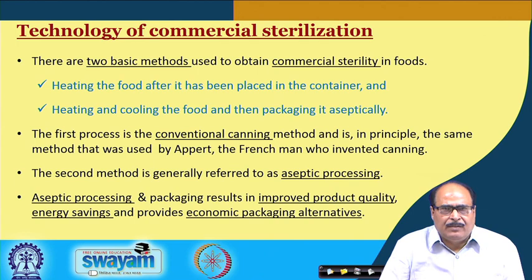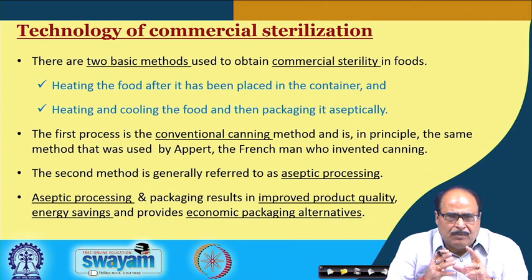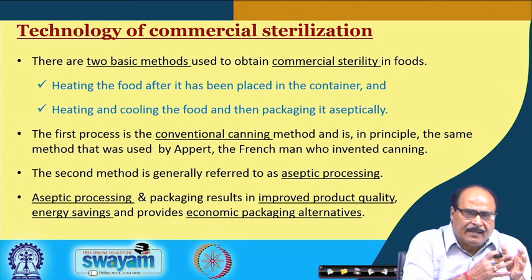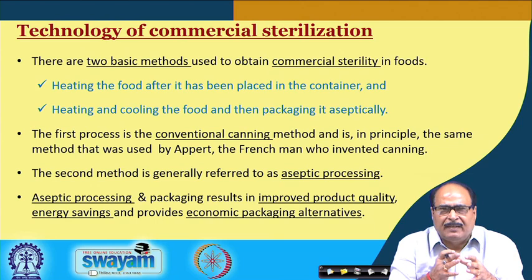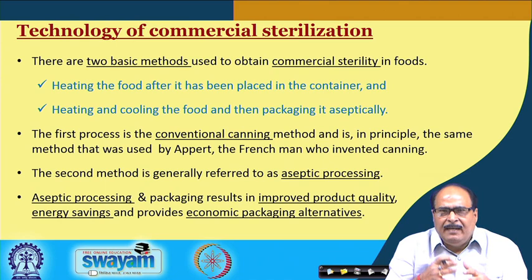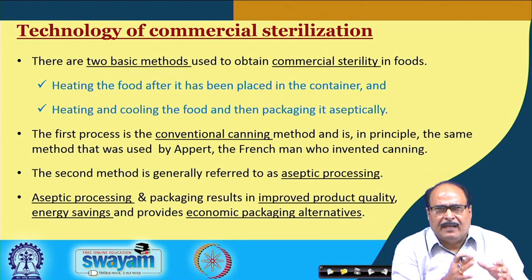There are basically two methods which are generally used for commercial sterilization of foods. In one case, the food is first packaged in the container and then heat treated. In the other case, the food as well as the packaging material are separately sterilized, then it is followed by packaging in an aseptic environment. The first process — heating the food after it has been placed in the container — is actually the conventional canning method.